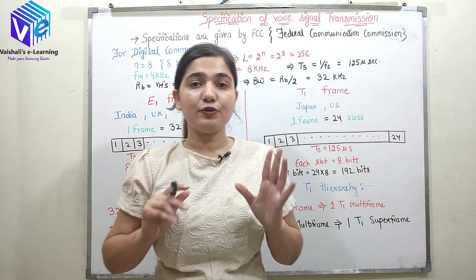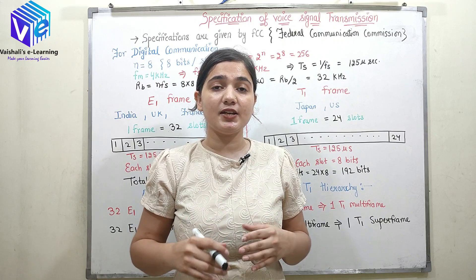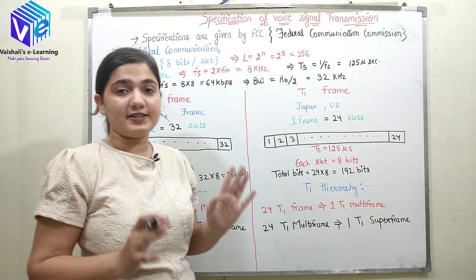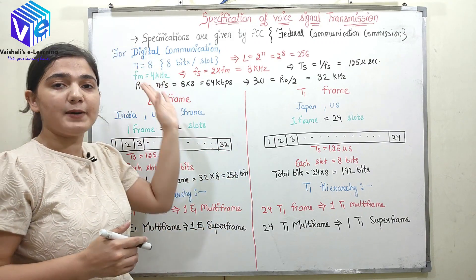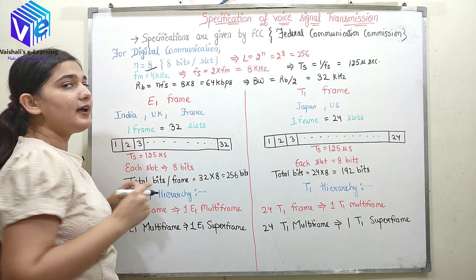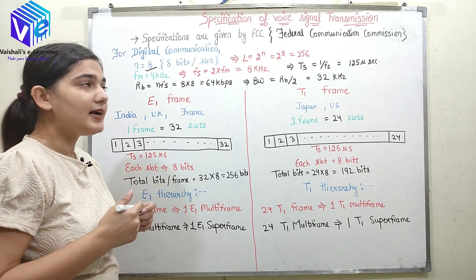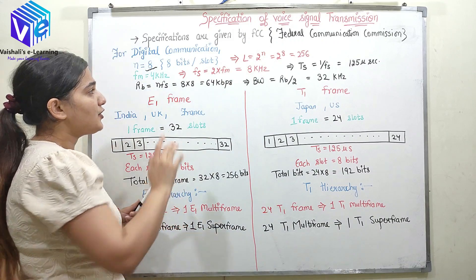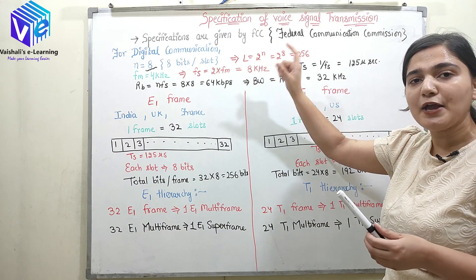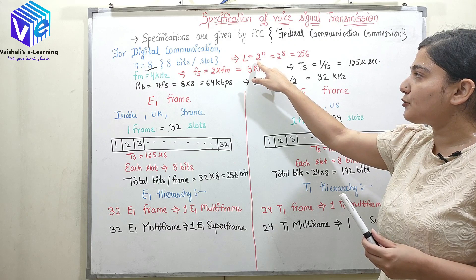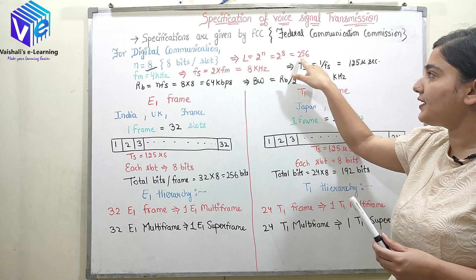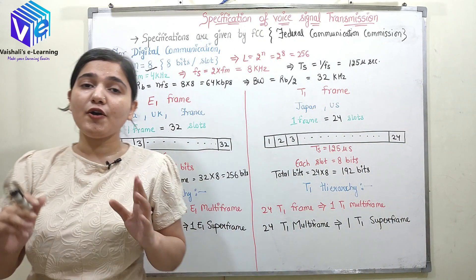In digital communication, the FCC specifies 8 bits per slot. Now if I talk about n bits, the number of levels would be 2 raised to the power n. Since the number of bits is 8, 2 raised to the power 8 is equal to 256 levels.